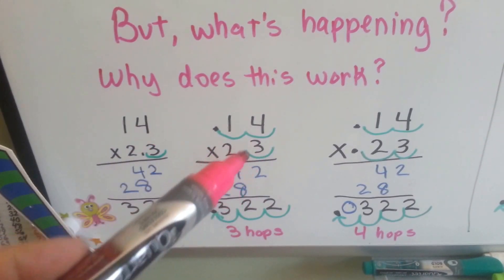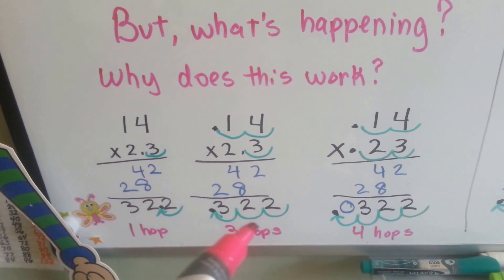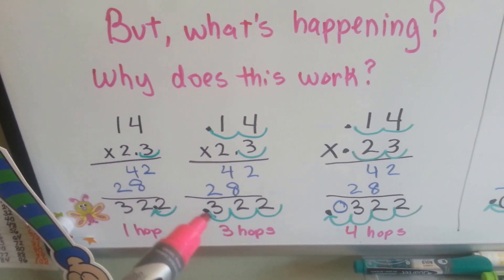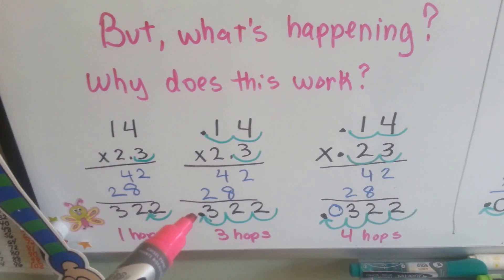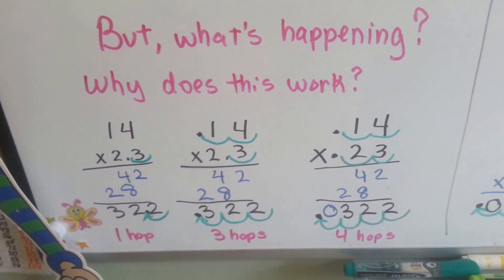We'd have 1, 2, 3 hops. 1, 2, 3 hops. And the decimal point would go in front of the 3. We'd have 322 thousandths.